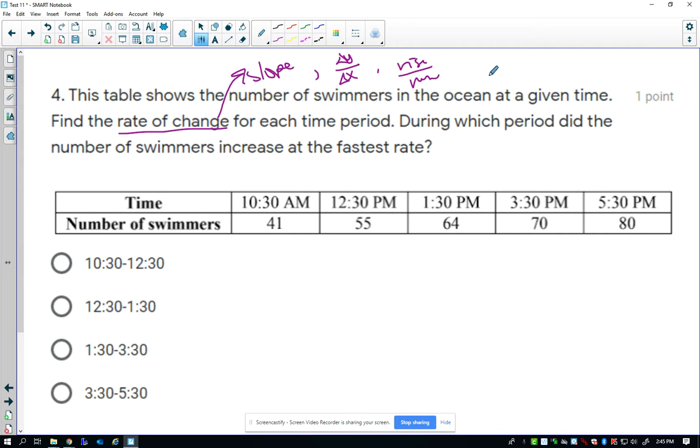During which period did the number of swimmers increase at the fastest rate. So, rate of change, you're having to check the time and the number of swimmers.